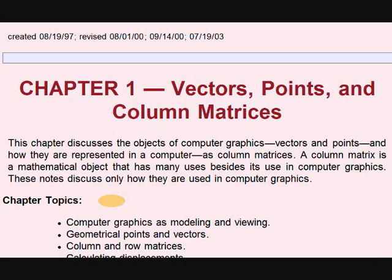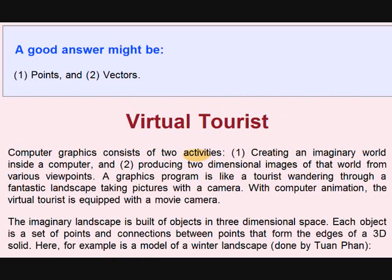Normally vectors, fonts and column matrices are used in objects of computer graphics. A computer graphic consists of two activities: creating an imaginary world and producing two-dimensional images of that world.